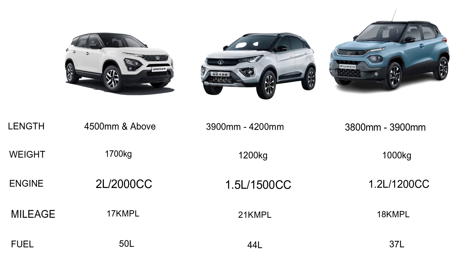We can also look at the power and performance. Normally, the large SUV has a 2.0L engine, that is 2000cc. The compact SUV has a 1.5L engine, 1500cc. And the subcompact SUV has a 1.2L engine, 1200cc. So as the car size decreases, the engine size and power are also less.